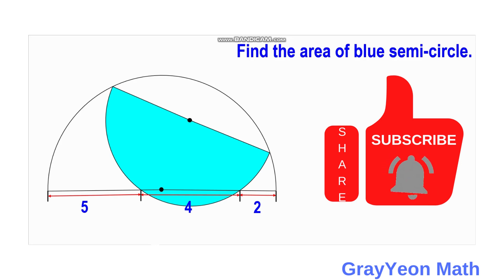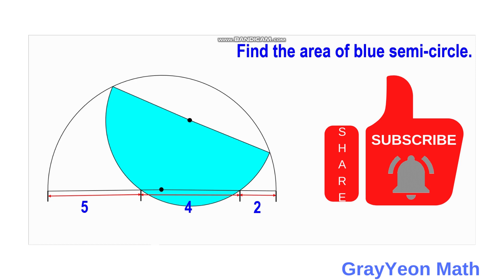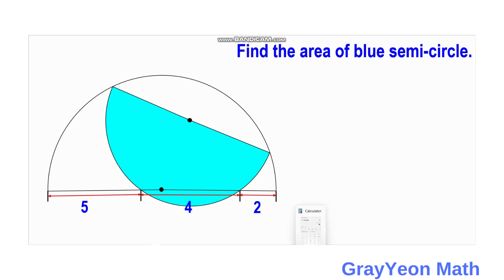Welcome to Grey on Mat. We are asked to solve this problem: we are to find the area of the blue semicircle. This blue semicircle is inscribed in a larger semicircle, with the points on this blue semicircle intersecting the diameter of the larger semicircle as shown. We are to find the area of the blue semicircle.